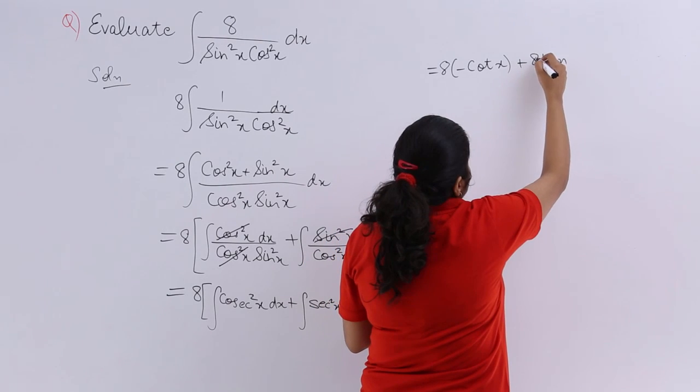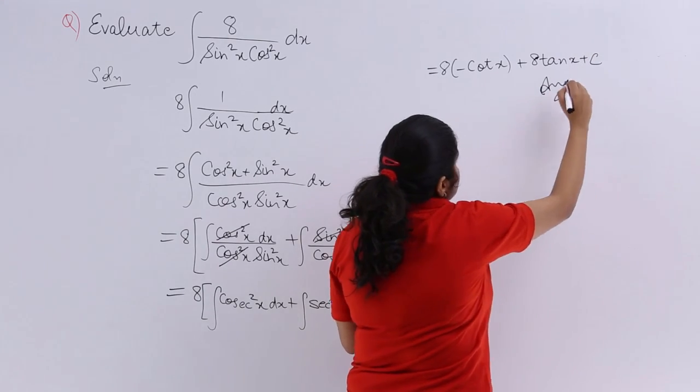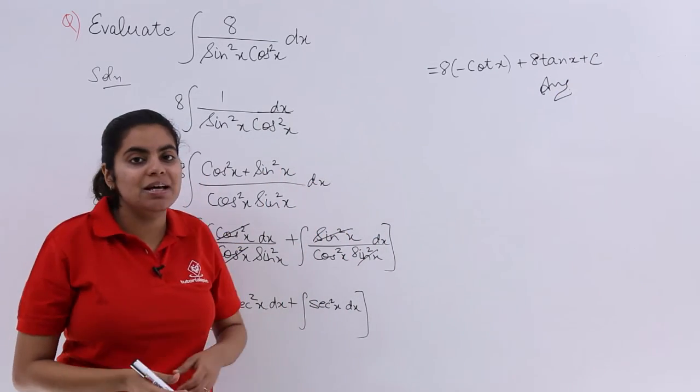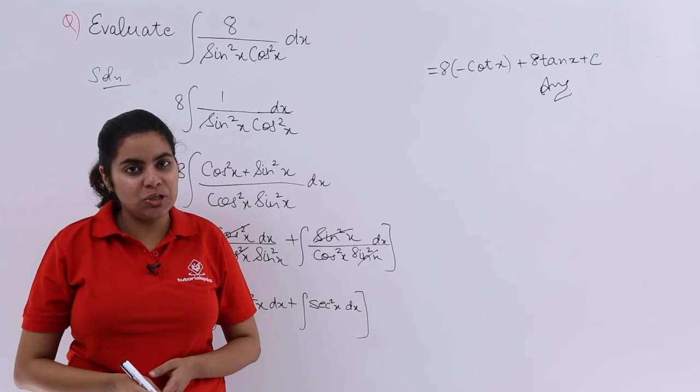So 8 tan x and plus c should be there as the constant of integration. It does not change. So this is the answer: minus 8 cotx plus 8 tan x plus the constant of integration.